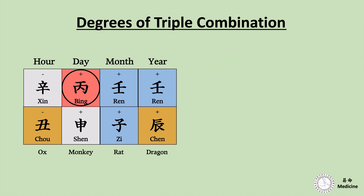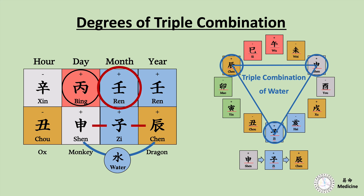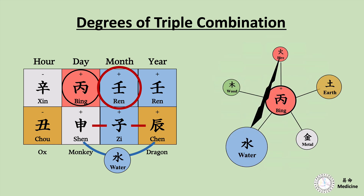The next thing I want to discuss is about the degrees of triple combinations. This chart has a triple combination of water — Shen, Zi, Chen. And theoretically, the perfect triple combination is formed when the middle branch of the combination, in this case Zi water, is located at the monthly branch and located in the middle of three branches. All three branches have to be side-by-side, and a water stem has to appear on the heavenly stem. In this kind of perfect triple combination structure, the power of the triple combination becomes the strongest.